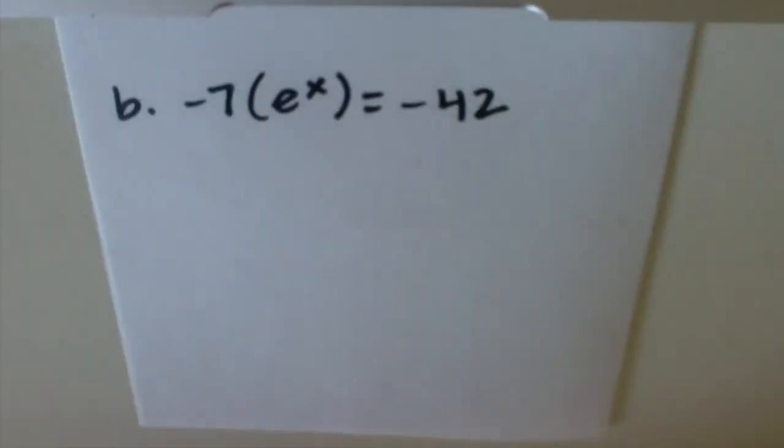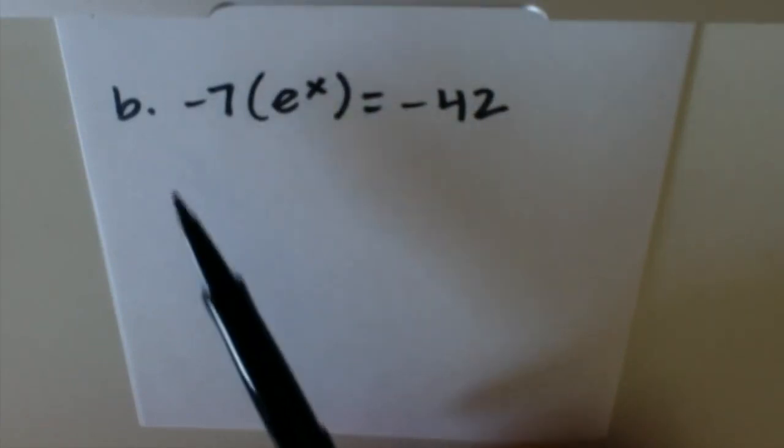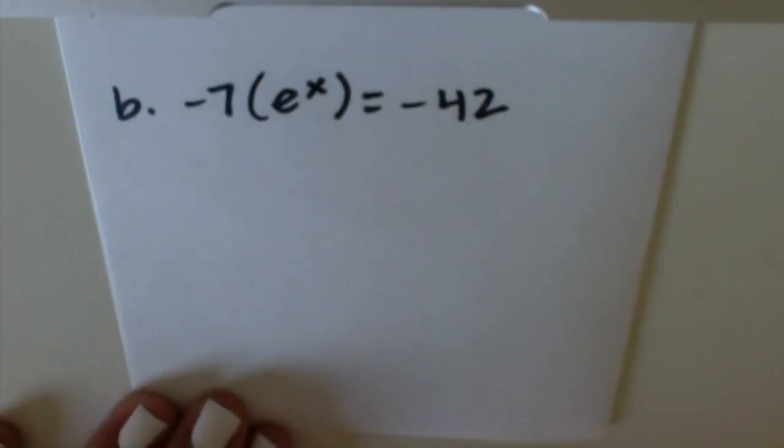This next example says -7e^x = -42. So like a regular equation, the first thing we're going to do to be able to solve for x is we want to get rid of anything extra on that side. So we're going to divide both sides by -7.